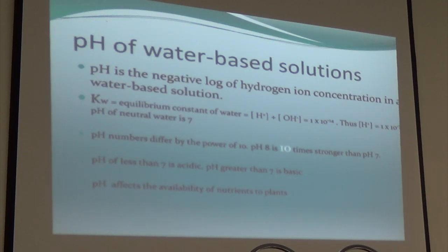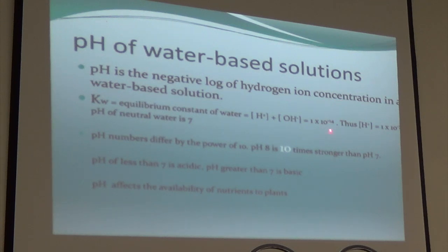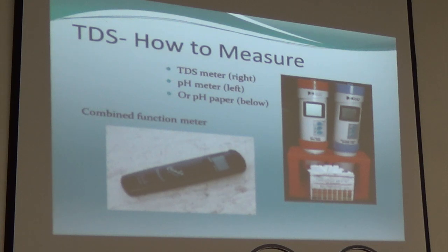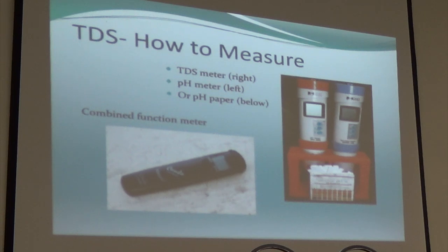pH is the negative log of the hydrogen ion concentration. That's the reason why neutral is considered 7, but this is an exponent — every single digit change in pH is ten times stronger or weaker. The pH is really important because minerals cannot be absorbed if the pH is incorrect.